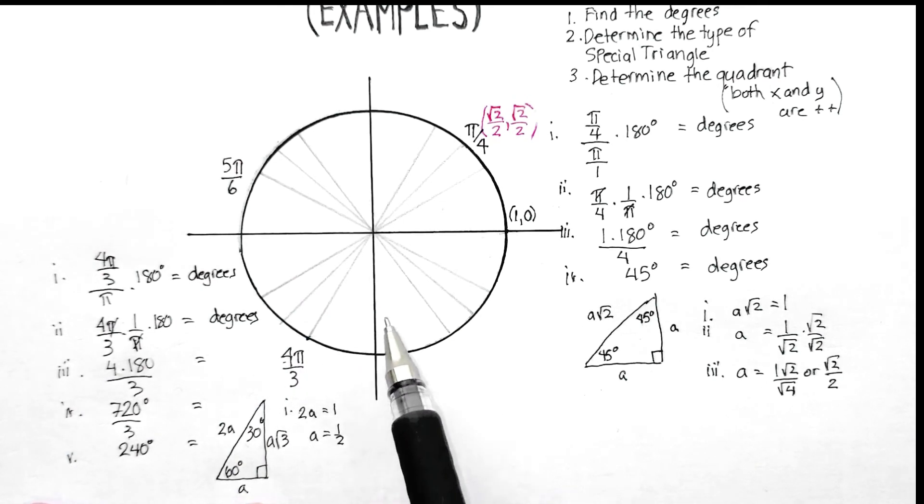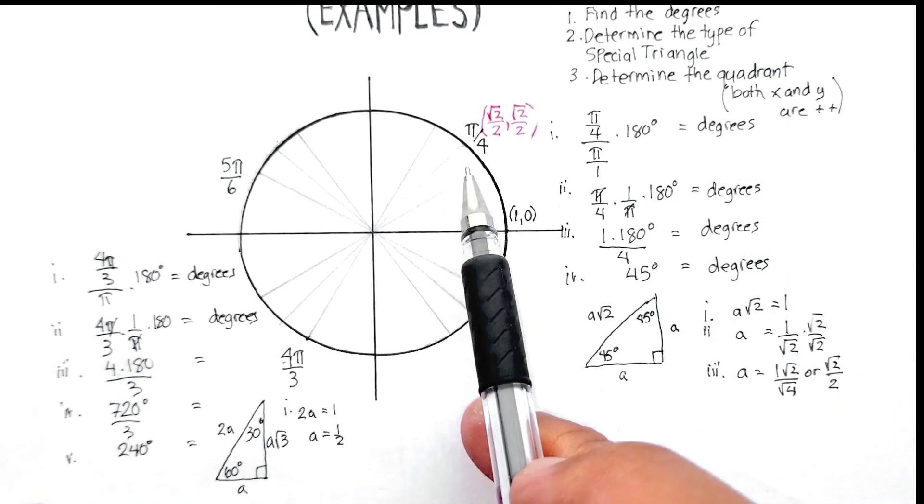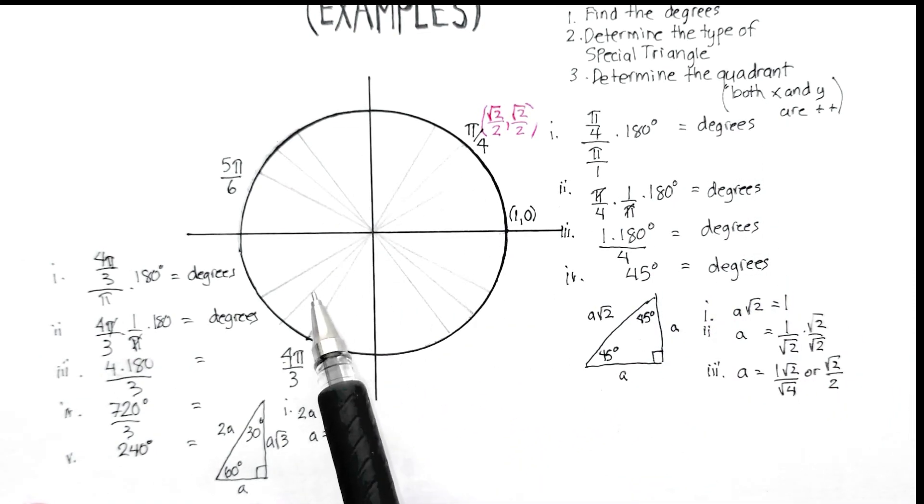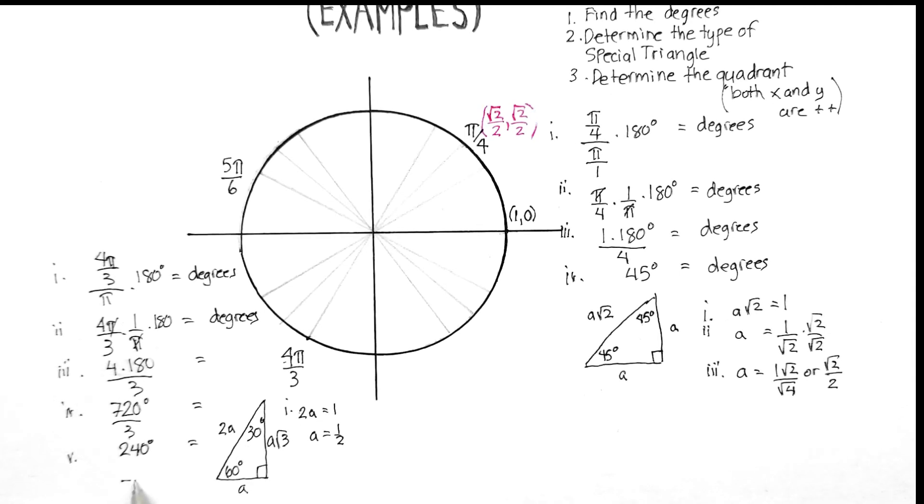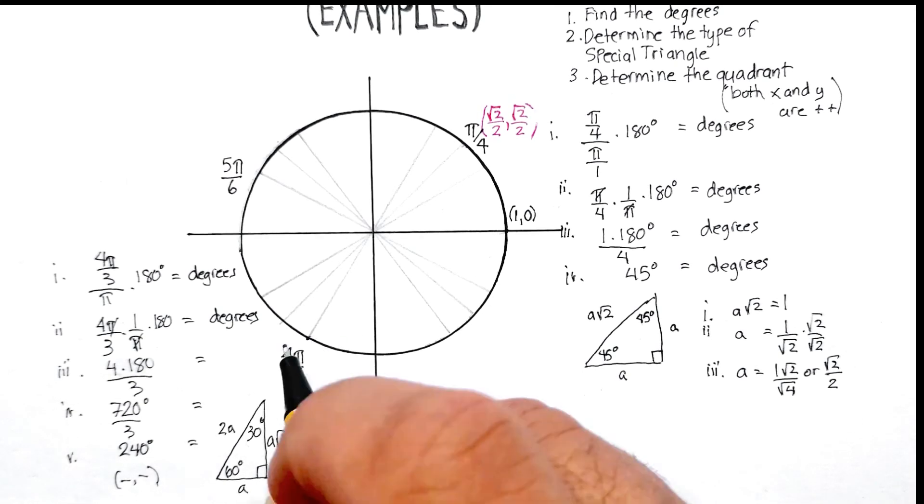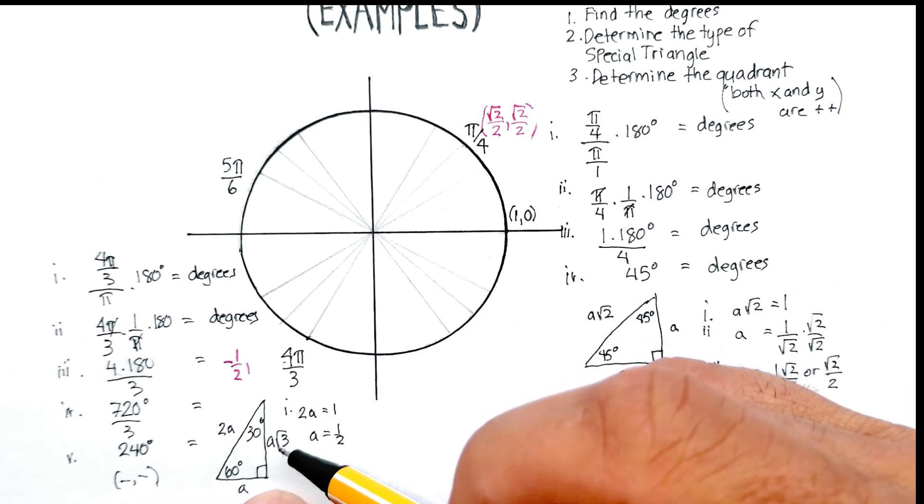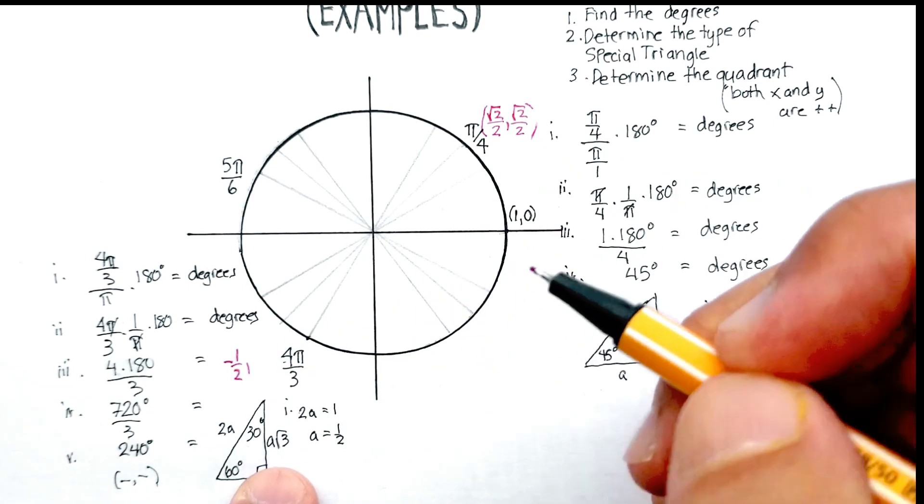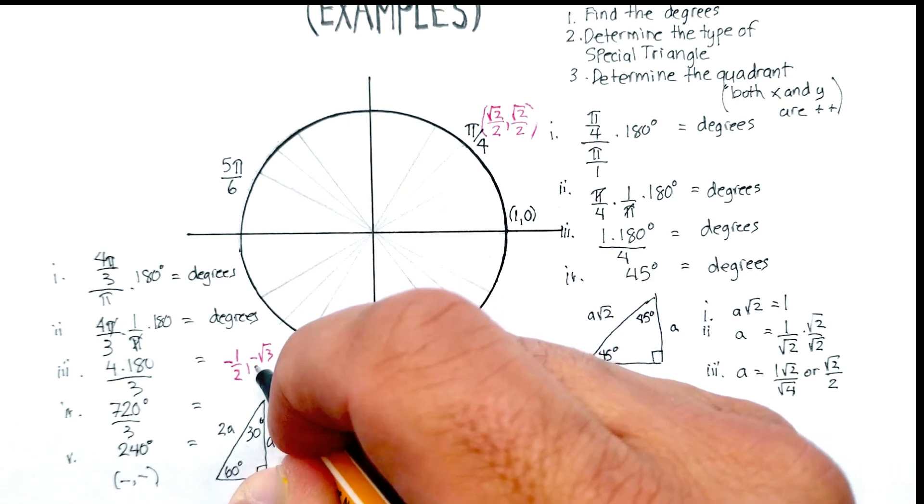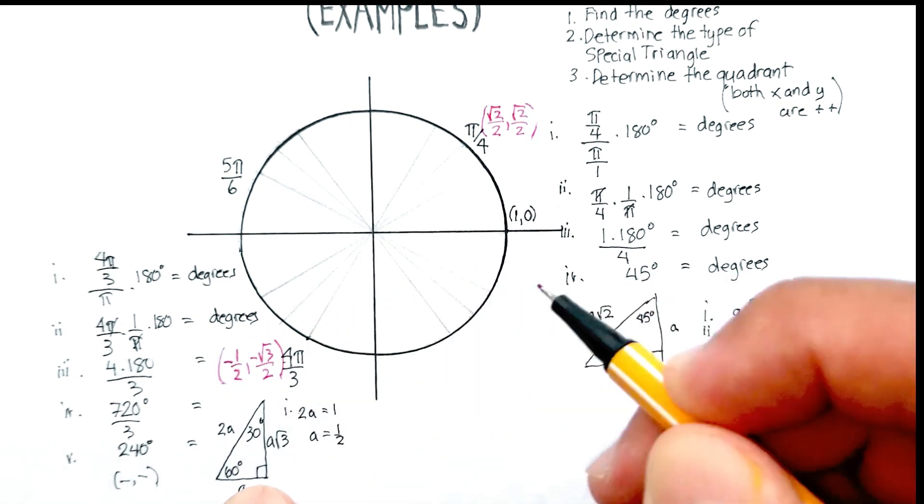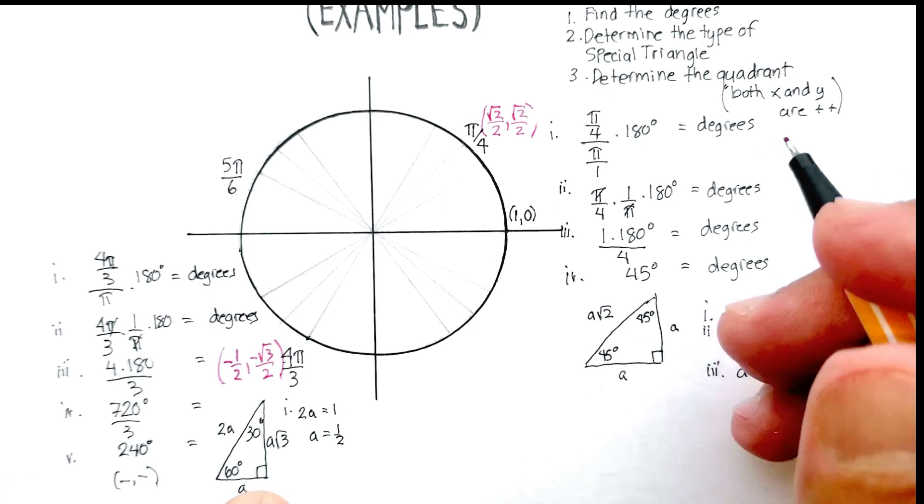Now, the interesting thing is we have to determine which quadrant we're in, and we're in the third quadrant. And remember, in the third quadrant, both the x and the y are negative. So we're going to say, at this location, the A is going to be a negative 1 half, and the y is negative √3 over 2. Okay, I hope this was helpful.